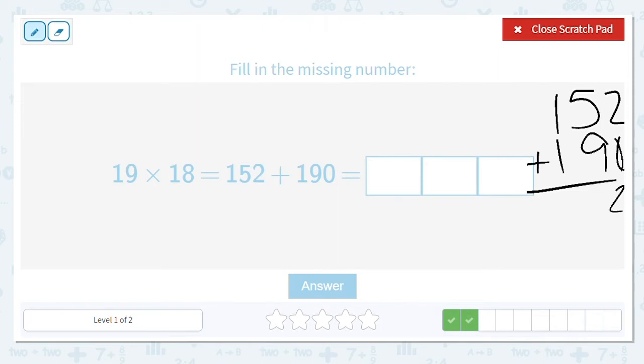Here we go. So 2 plus 0 is 2, 5 plus 9 is 14, carry the 1, 1 plus 1 is 2 plus 1 more is 3. So my answer, my product of 19 times 18, is 342.